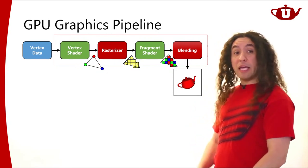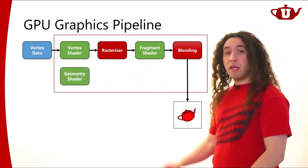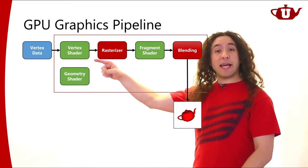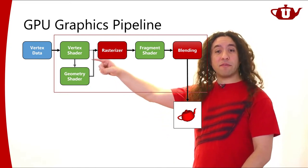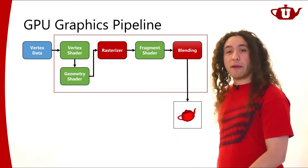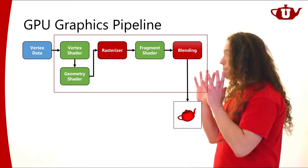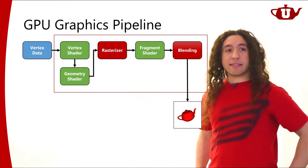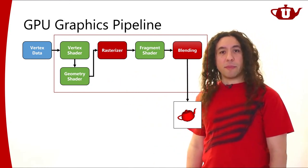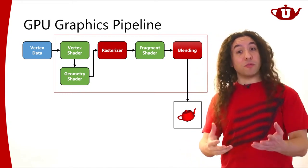A geometry shader, if you want to use it, will appear in the vertex processing stage. It will get its data from the vertex shader and its output will go directly to the rasterizer. So that is our topic today — how do we put this geometry shader here, and what can we do with it?